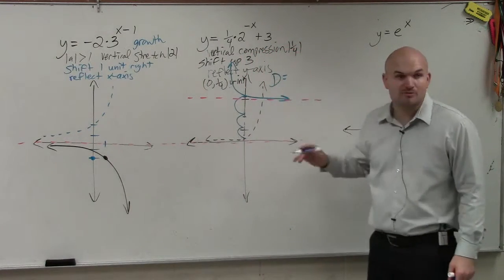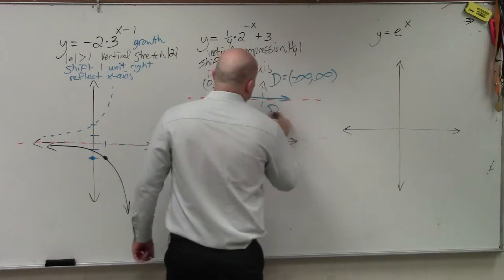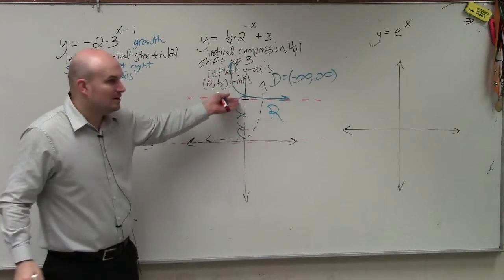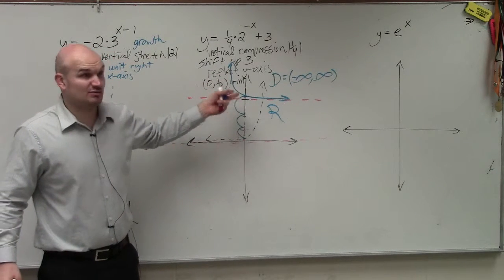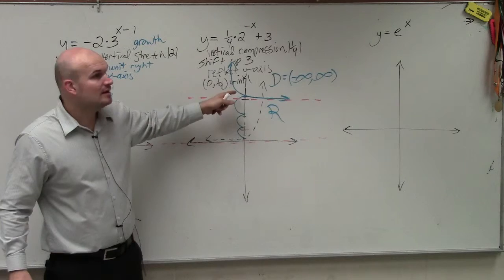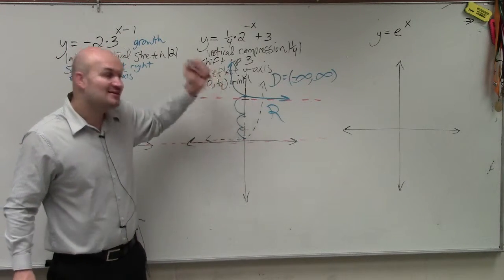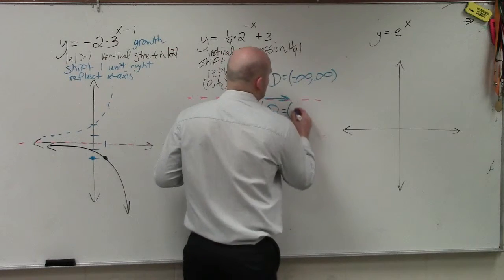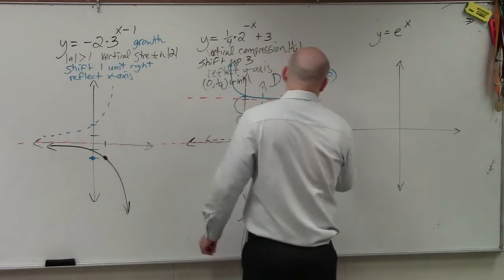So when we're looking at identifying the domain and range, for instance, what is the domain? The domain is this one simple, negative infinity to infinity. However, the range. How low does this graph go? How low does this graph go? 3. 3. And is 3 a part of the graph? Is 3 a point on this graph? It's an asymptote. Does the graph touch the asymptote? No. So in this case, it is a parentheses, not a point. OK? So it's going to be 3 comma infinity.